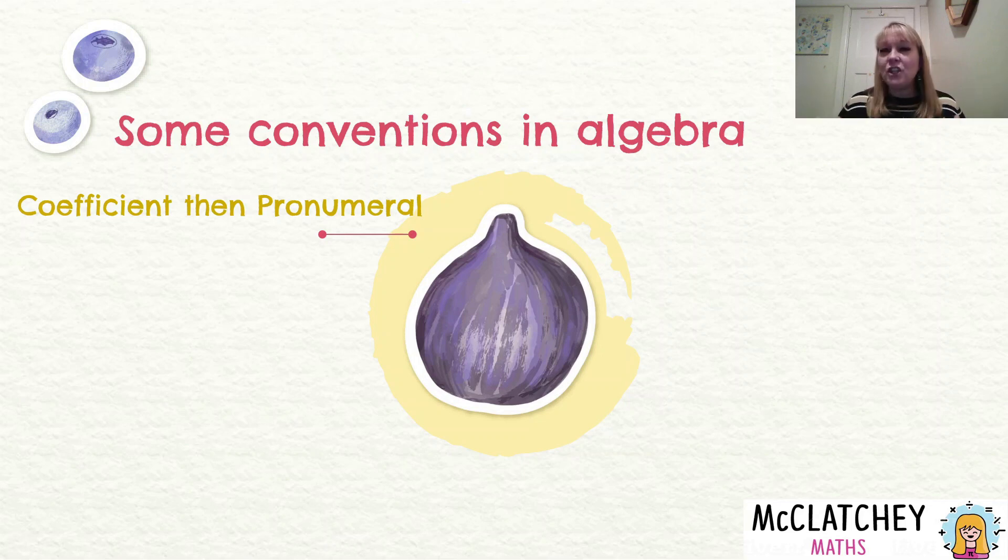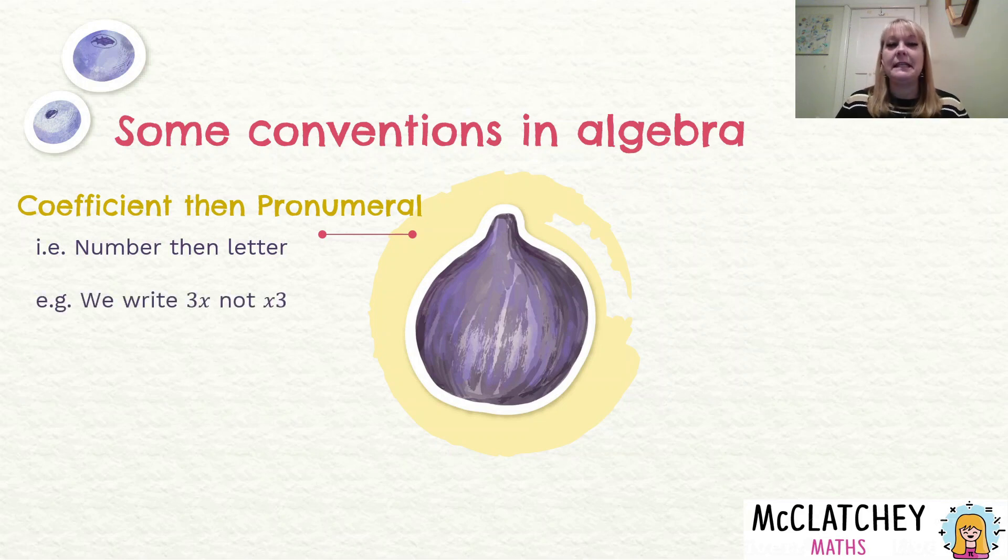So some conventions you need to be aware of in algebra. And when I say conventions, convention means a tradition, or something that we typically do. And it's just assumed everybody knows that's what we do. So the first convention is, we always write our coefficient, our number, and then our pronumeral, our letter. So here's an example of how we would write that we would write 3x, not x3. So it's important to know that because sometimes when you write x3, it can look like times by three. So that's why we write the three and then the letter afterwards.